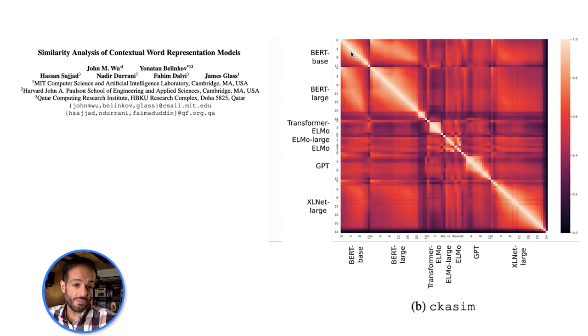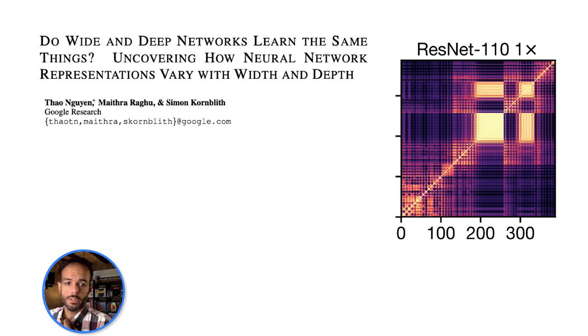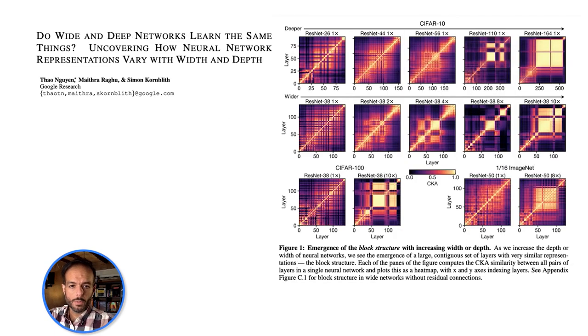A lot of this seems to be around 0.3 to maybe 0.6, but models of the same family, so BERT and BERT base, tend to build representations that are more similar to each other.